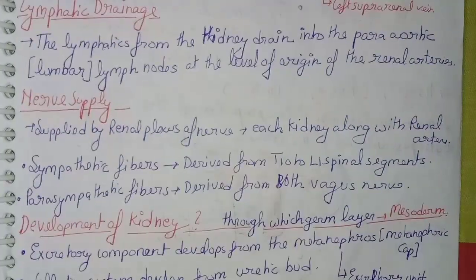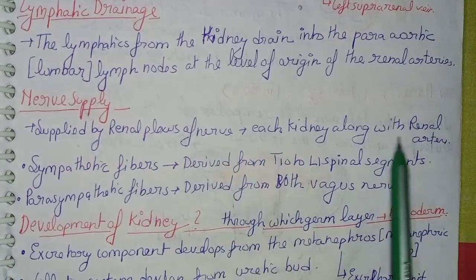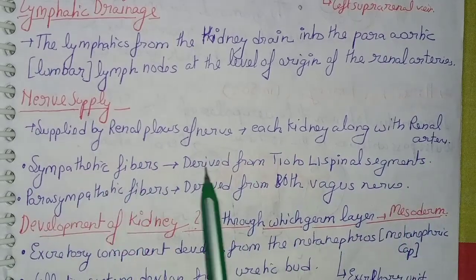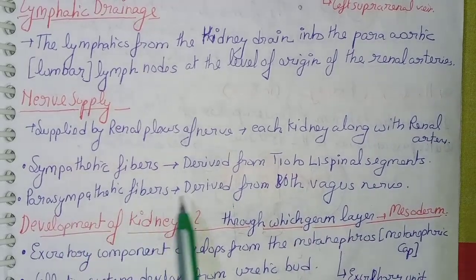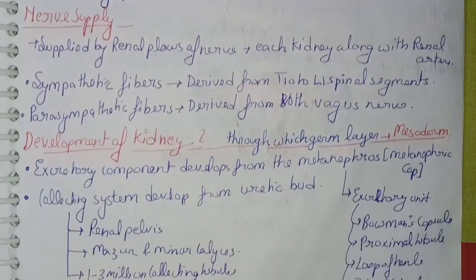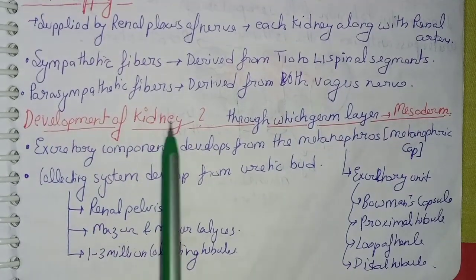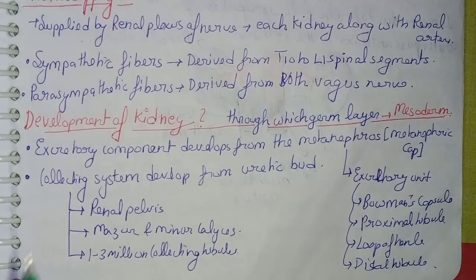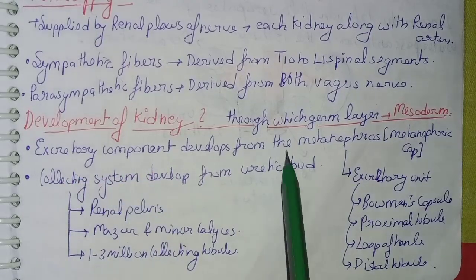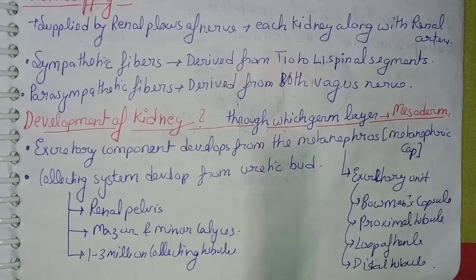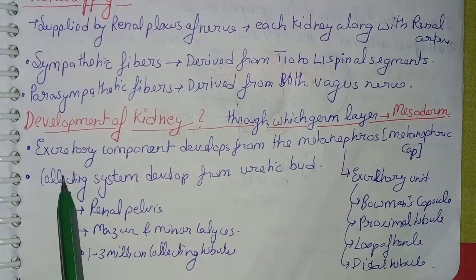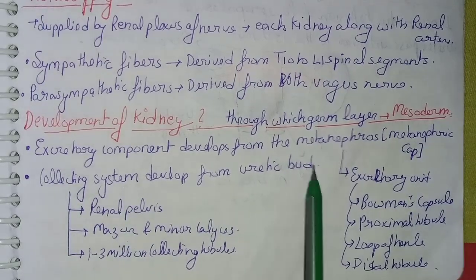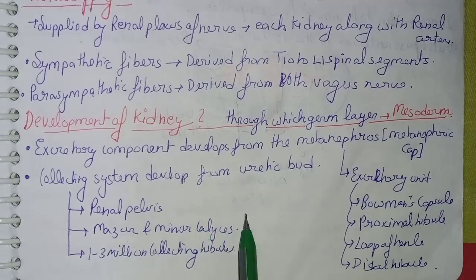Coming to nerve supply: the kidney is supplied by the renal plexus of nerves along with the renal artery. The sympathetic fibers are derived from thoracic 10 to lumbar 1 spinal segments, and the parasympathetic fibers are derived from both vagus nerves. Coming to the development of the kidney: it develops through the mesoderm. The excretory component develops from the metanephric cap, which consists of Bowman's capsule, proximal tubule, loop of Henle, and distal tubule. The collecting system develops from the ureteric bud and consists of the renal pelvis, major and minor calyces, and 1 to 3 million collecting tubules.